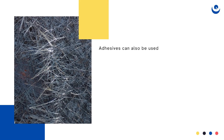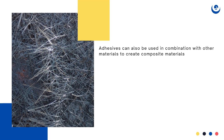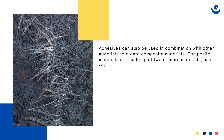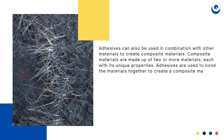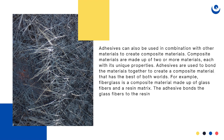Adhesives can also be used in combination with other materials to create composite materials. Composite materials are made up of two or more materials, each with its unique properties. Adhesives are used to bond the materials together to create a composite material that has the best of both worlds. For example, fiberglass is a composite material made up of glass fibers and a resin matrix. The adhesive bonds the glass fibers to the resin matrix, creating a strong and durable material.